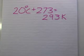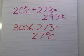Here's an example. Room temperature at about 20 degrees Celsius plus 273 is 293 Kelvin. And vice versa, if you have 300 Kelvin, subtract 273 to give you 27 degrees Celsius.